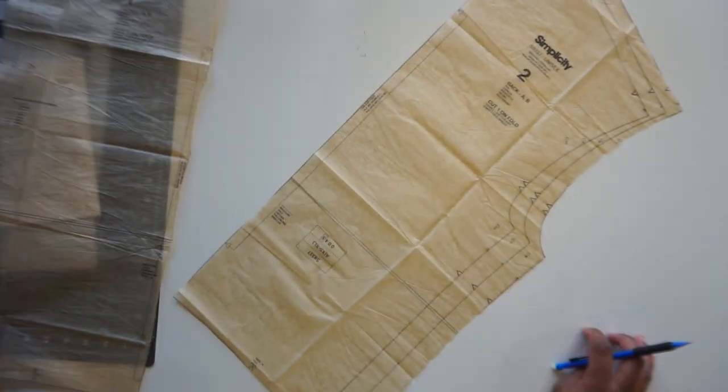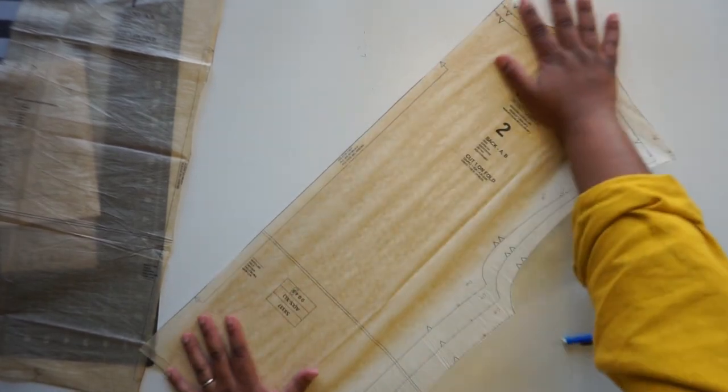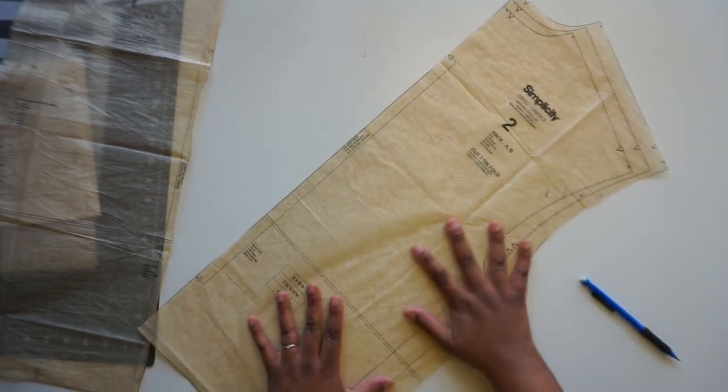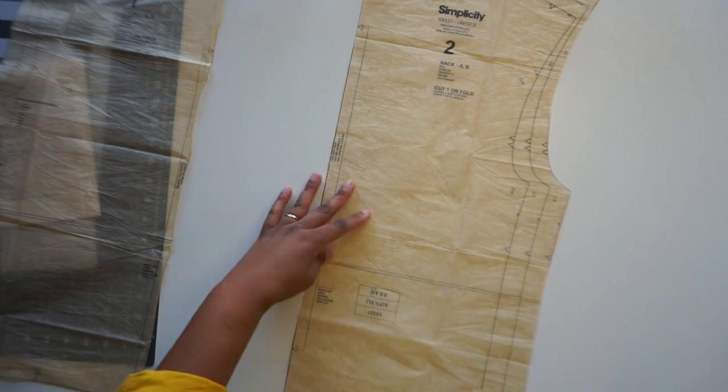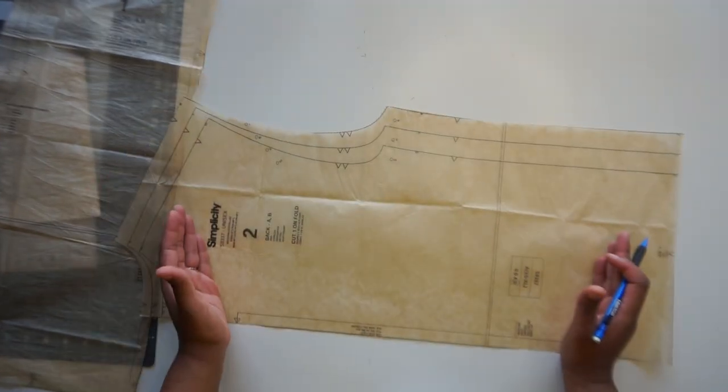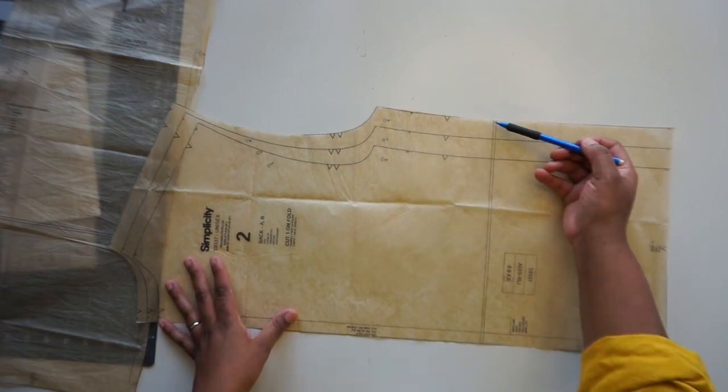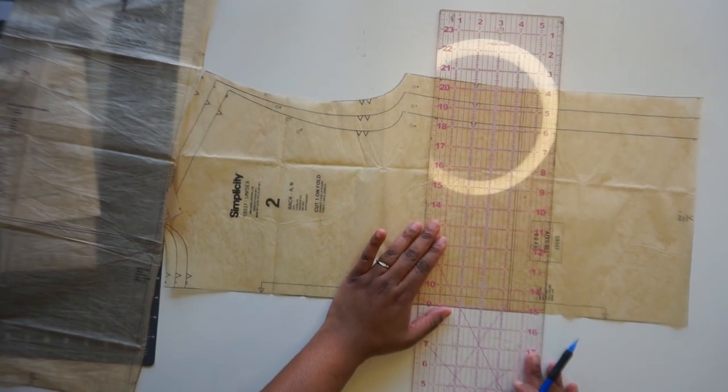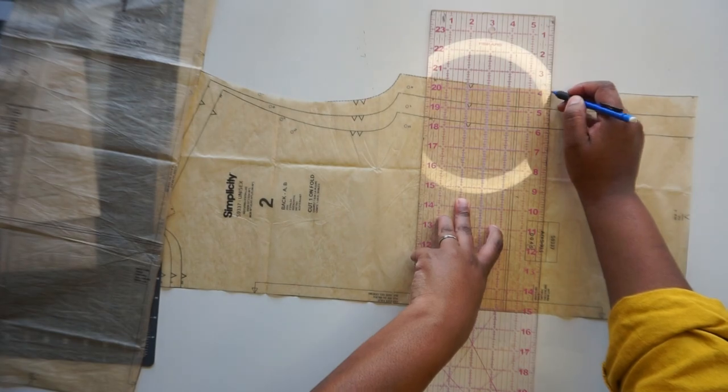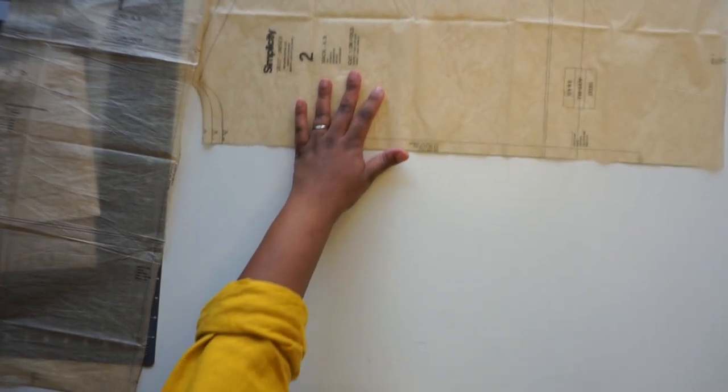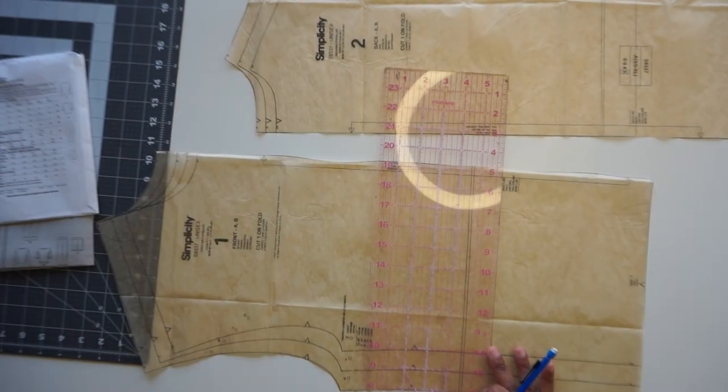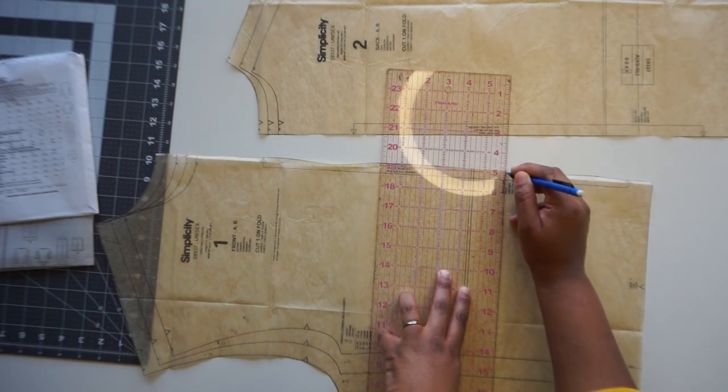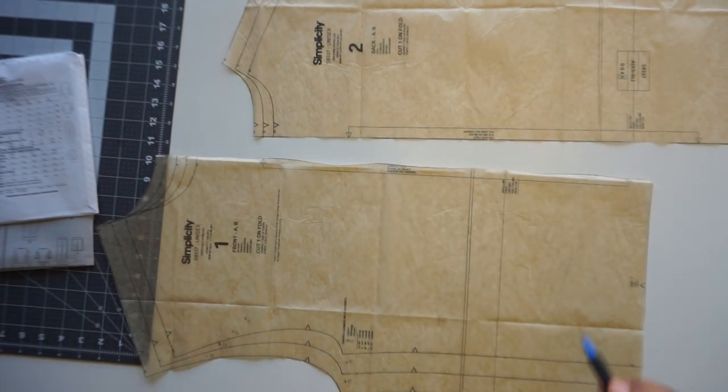The first piece that we're going to work with altering is our back and our front. And how we're going to do this is actually really simple. So before you start altering your pattern, everyone recommends that you go to your iron and you give it a good press to smooth out all of those wrinkles. However, we're living that rebel life over here, so we're not going to do that. So basically what we want to do now is we want to crop this top. So this is our shortened line. I'm just going to play off of this shortened line and I'm going to go about an inch and a half below the shortened line. And I'm going to do that also to the front. I'm going to go an inch and a half down and then I'm just going to draw my new cutting line.